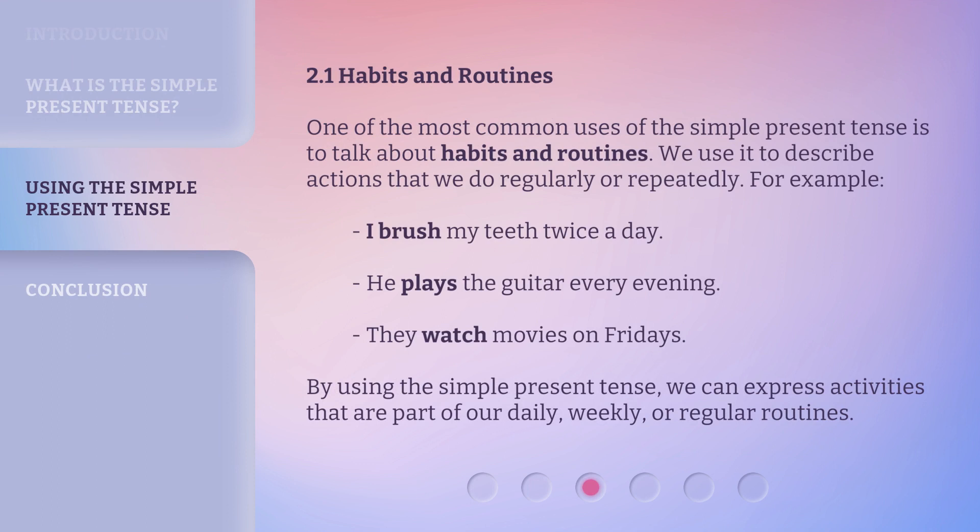2.1 Habits and Routines. One of the most common uses of the simple present tense is to talk about habits and routines. We use it to describe actions that we do regularly or repeatedly. By using the simple present tense, we can express activities that are part of our daily, weekly, or regular routines.